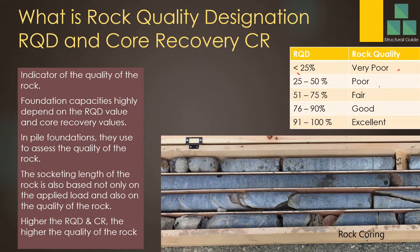What is RQD and Core Recovery? They are very important in assessing the condition of the rock — they indicate the quality of the rock. Foundation capacity highly depends on the RQD value and Core Recovery value. In pile foundations, they are used to assess the quality. Based on that, we determine the skin friction, end bearing, and socketing. We determine the socketing length based on the load we apply, and we also consider the RQD and Core Recovery values to terminate the pile. Therefore, we need to know about these values and the method of assessing them very well.